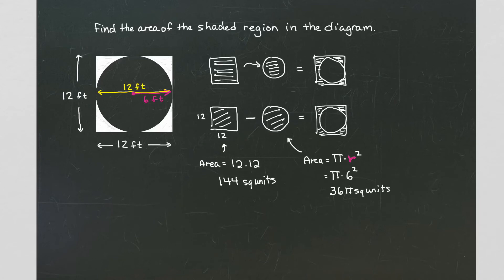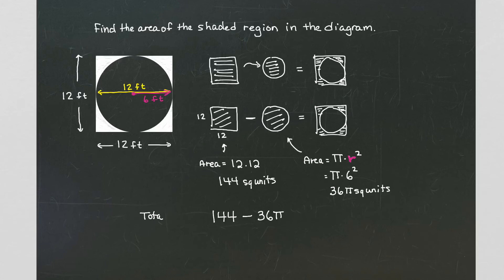We now want to put it together. We're starting with an outside square of 144 square units, and we're removing from it an inside circle that has 36 pi square units. So the total area left on the outside can be represented by the expression 144 minus 36 pi square units. Since we're using feet, the total area of that white part would be 144 minus 36 pi square feet.